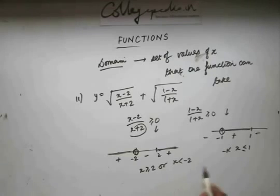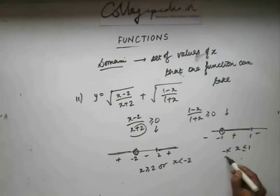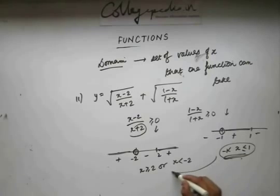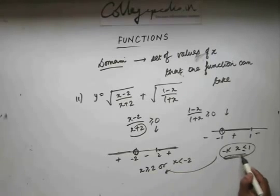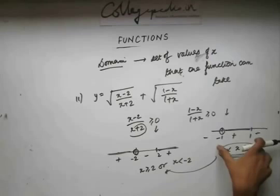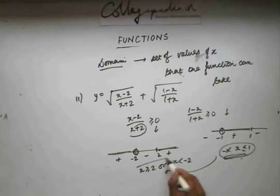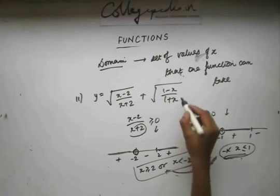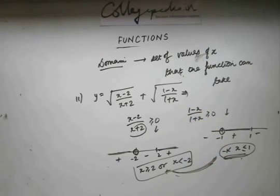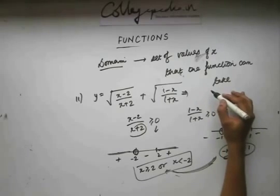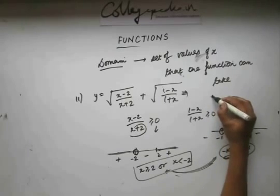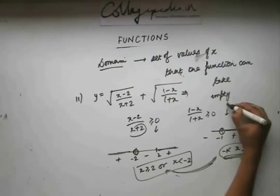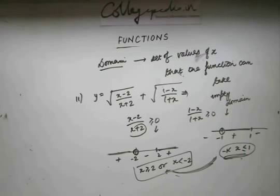Now, this and this condition should simultaneously hold true. But you see that minus 1 to 1 is excluded in this part — it doesn't come in this region. So the intersection of these two is null; there is no value of x for which this function is defined. This function has an empty domain.